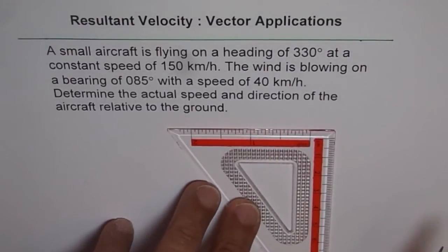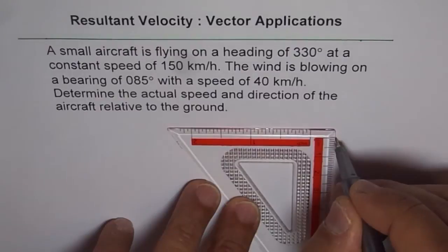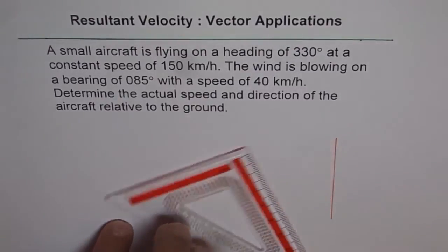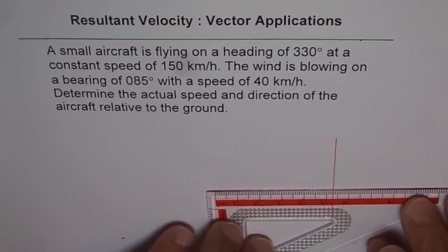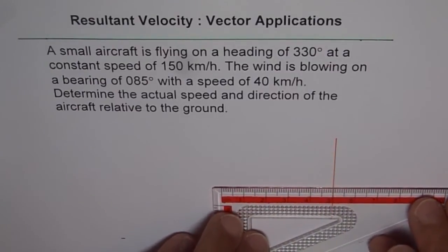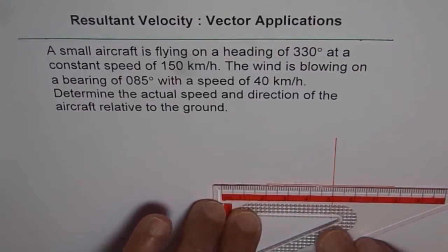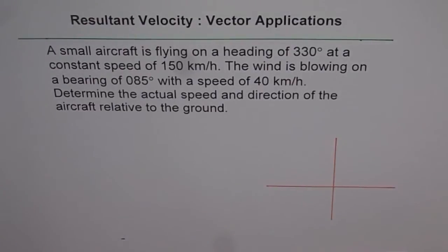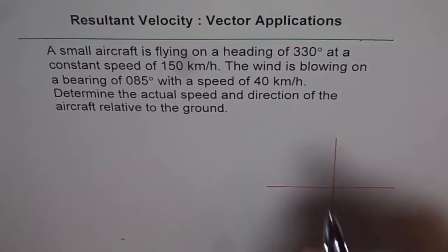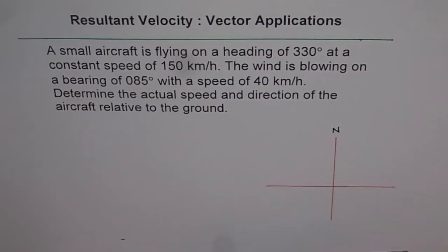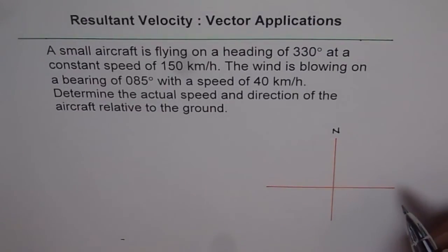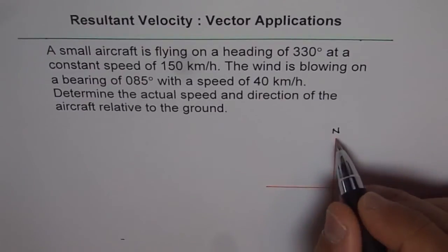Let's start making our diagram. I'm trying to be accurate and neat this time. Here we have our axis — this represents north — and now I'll draw the east-west line. By default, north is always in this direction. You can change the direction of north for convenience, but in that case you have to write 'N' in the direction pointing north; if you don't write N, this direction will be assumed.